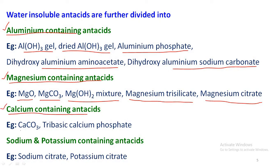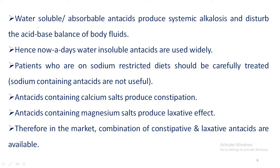Calcium containing antacids include calcium carbonate, also called precipitated chalk, and calcium phosphate, also called tri-basic calcium phosphate. Sodium and potassium containing antacids include sodium citrate and potassium citrate. All of these — aluminum containing, magnesium containing, calcium containing, and sodium/potassium containing antacids — are classified as water insoluble antacids.